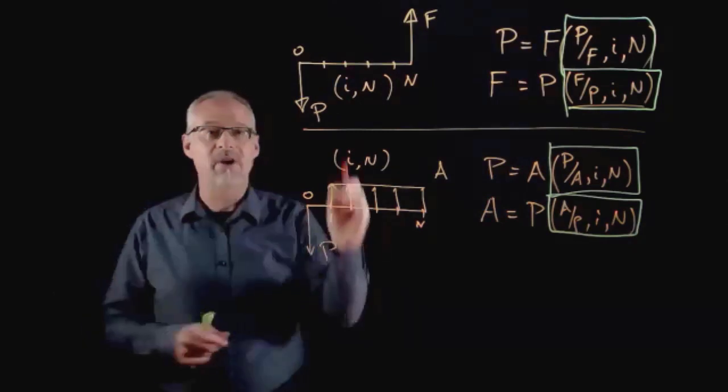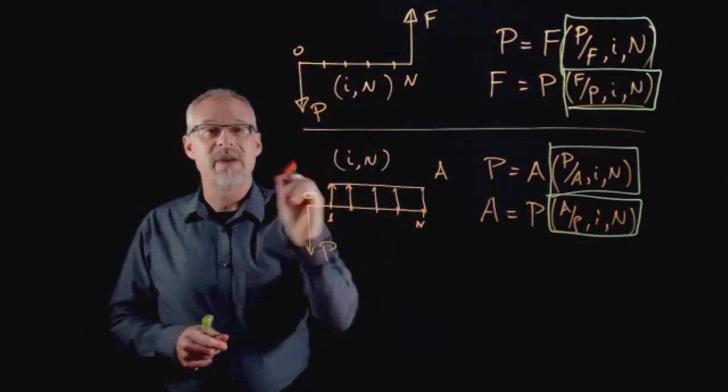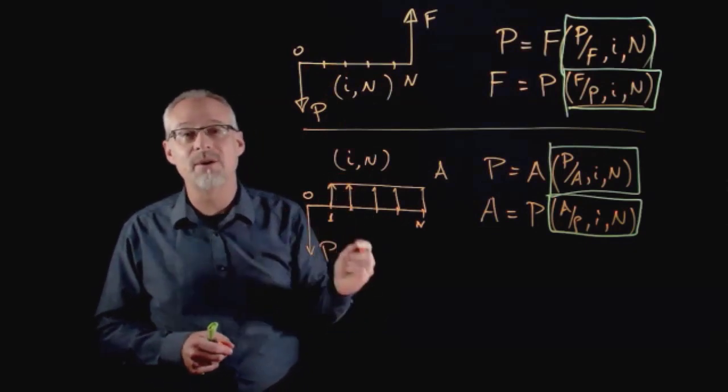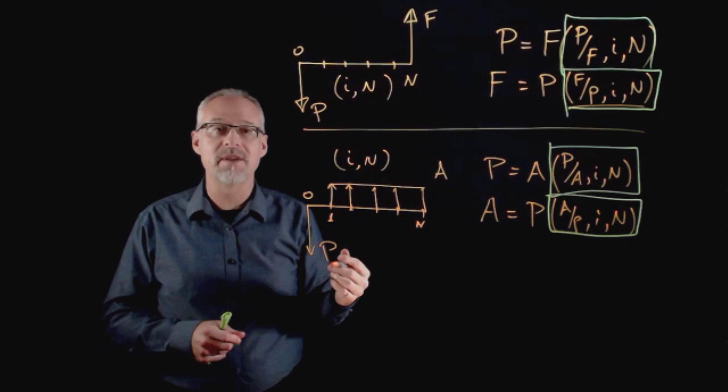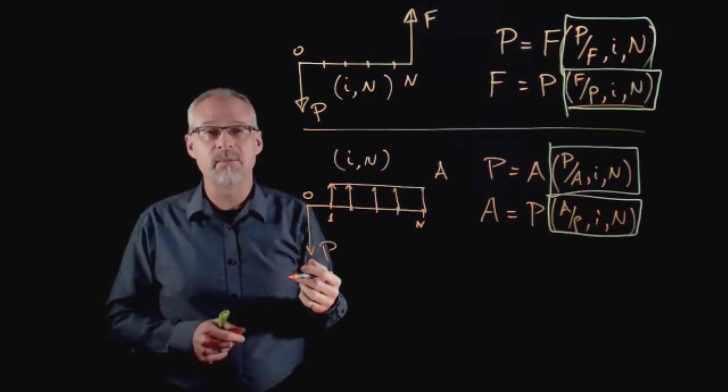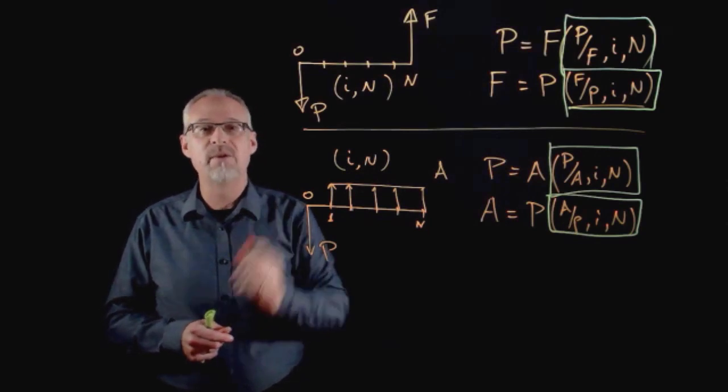Same thing, the P is at time zero and the F is at time n, where n can be anything. We have to use our chapter two skills to make sure we're using the right value of i for whatever that period is, whether it's a year, month, day, or quarter.